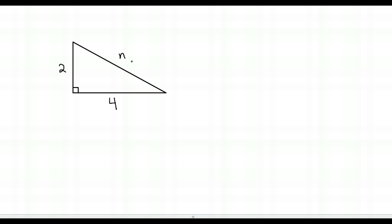Let's do one more. This one has the unknown as the hypotenuse. I've got 2 squared plus 4 squared equals n squared. That's 4 plus 16 equals n squared, which is 20. If n squared equals 20 and I take the square root of both sides, I get n equals the square root of 20.